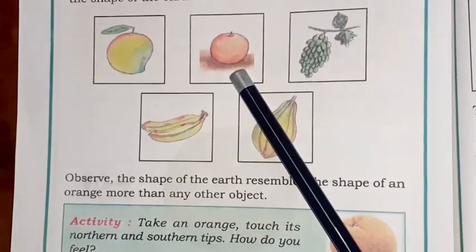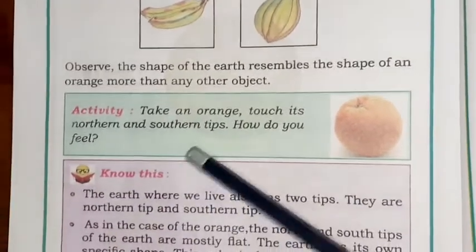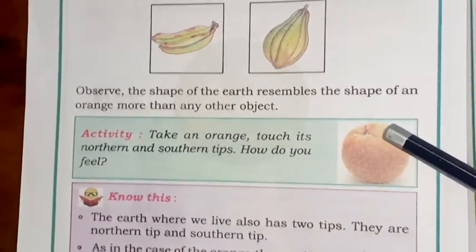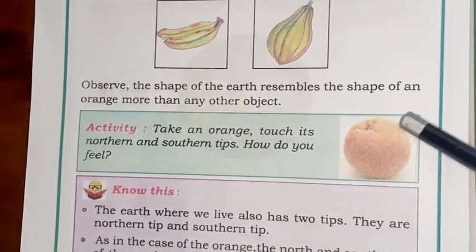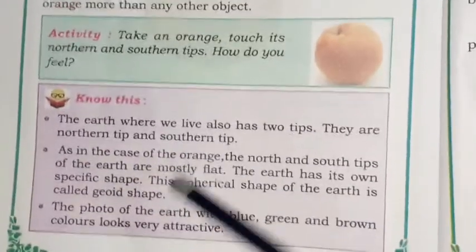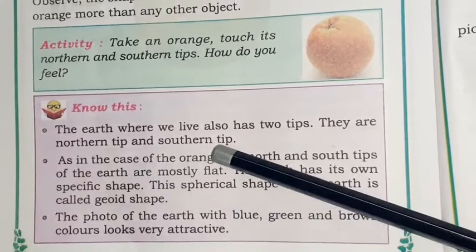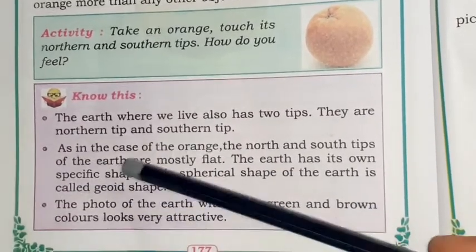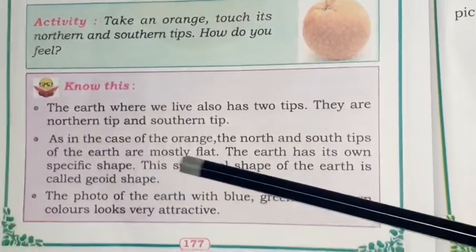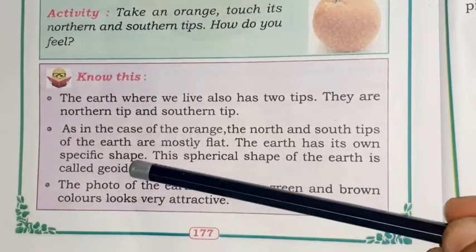Observe the shape of the earth — the orange resembles it more than any other object. Take an orange and touch its north and south tip. How do you feel? The tip is not flat. Similarly, the earth where we live also has two tips — a northern tip and a southern tip. Just as with the orange, the north and south tips of the earth are mostly flat.